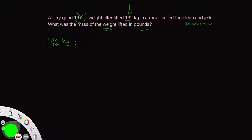If you look in your conversion table, you should be able to see that one kilogram is equivalent to 2.20 pounds. So let's get started here. Our starting quantity along with units is 192 kilograms.